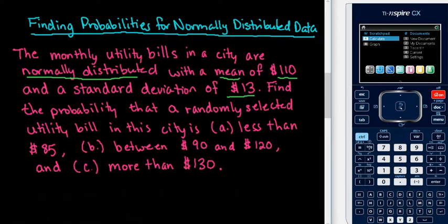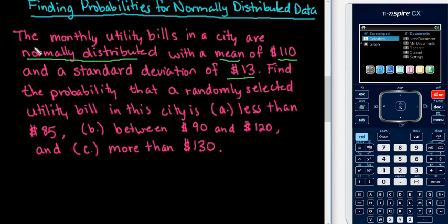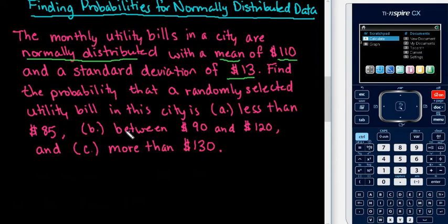For this video, we are going to use the TI Inspire graphing calculator to help us find the probability for a normally distributed data set. The situation we have is monthly utility bills in a certain city are normally distributed with a mean of $110 and a standard deviation of $13. We are going to find the probability that a randomly selected utility bill is: a) less than $85, b) between $90 and $120, and c) more than $130.